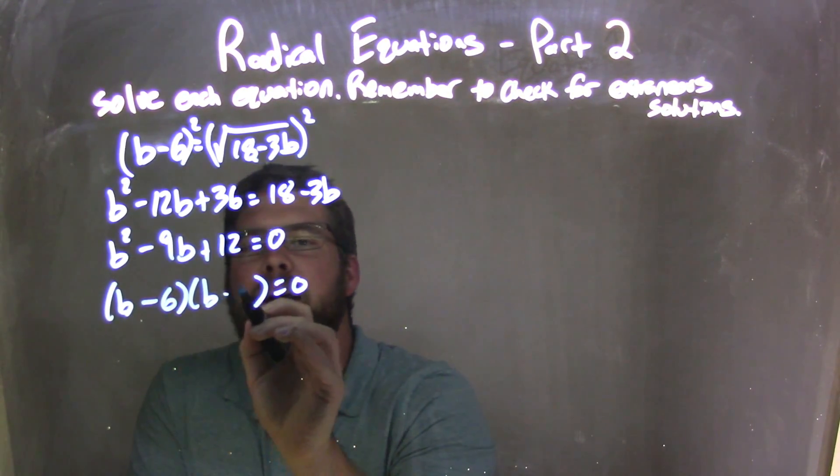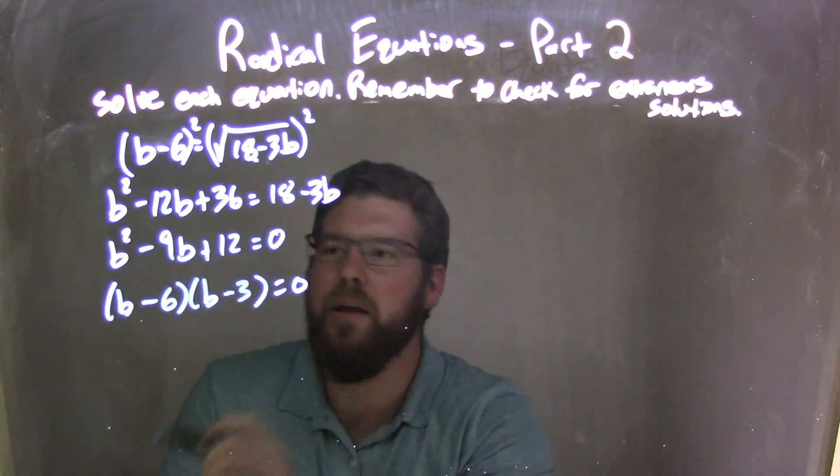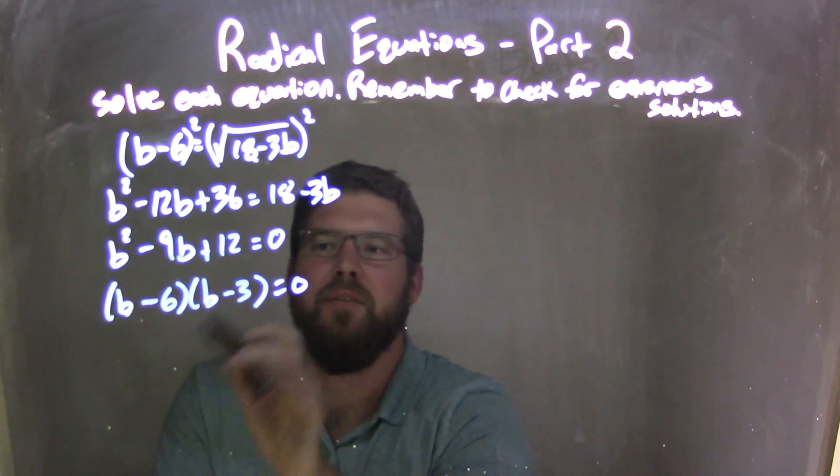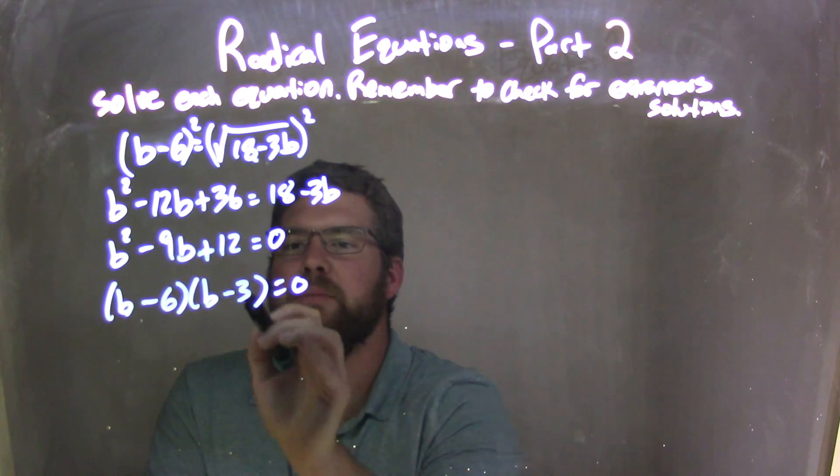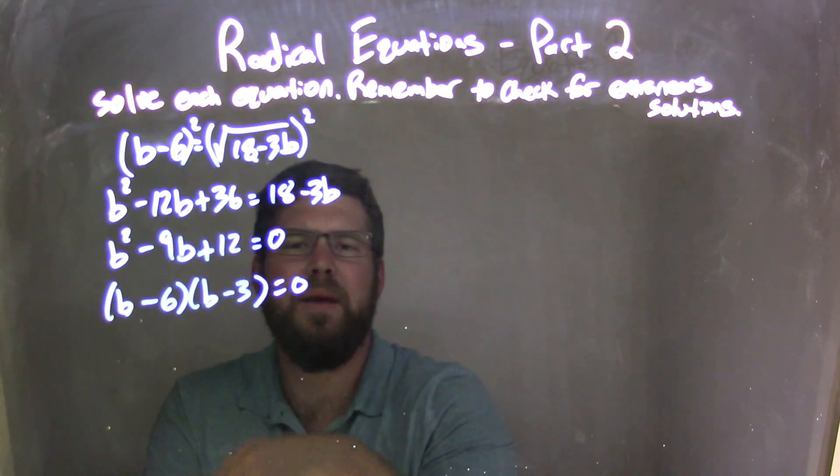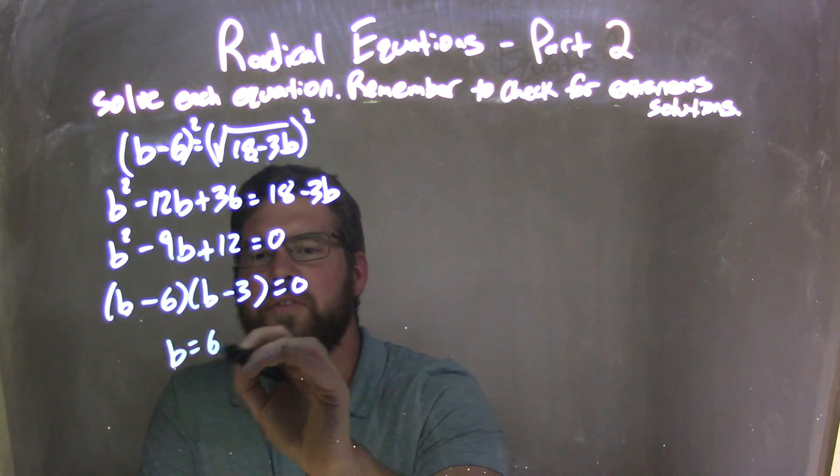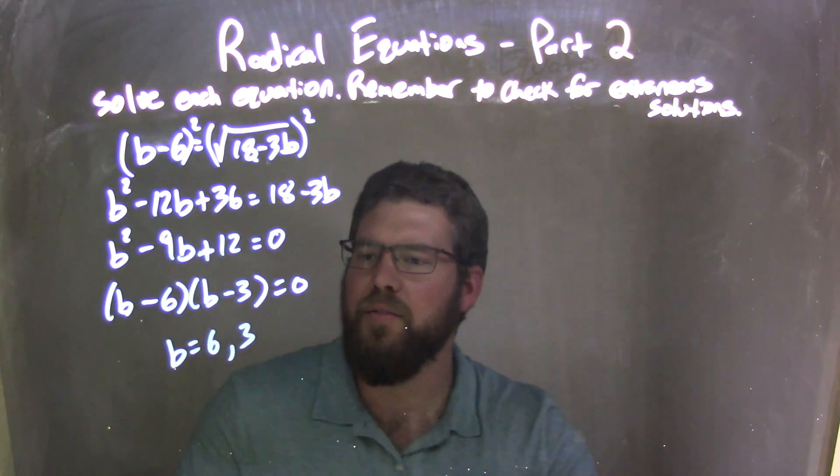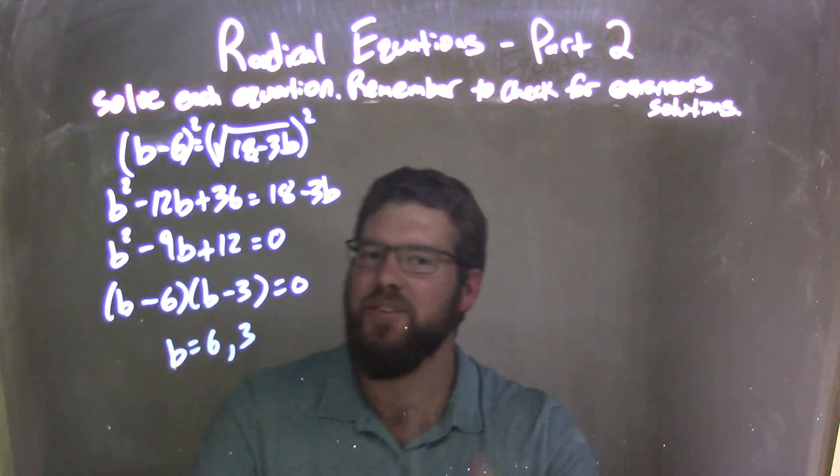Minus 6 and minus 3, those are the two numbers I was thinking. Negative 6 times negative 3 is a positive 12, and if I add them together, they become a negative 9, okay? So I set both of them equal to 0, and I get b equals 6 and b equals 3, so those are the two I need to check now.